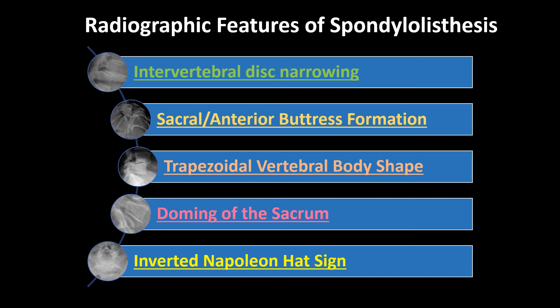Besides an anterolisthesis on an x-ray, there are multiple other radiographic features of a spondylolisthesis that may be present. These findings include intervertebral disc narrowing or degeneration if the spondylolisthesis has been there a while, anterior buttress formation, trapezoidal vertebral body shape, doming of the sacrum, and an inverted Napoleon hat sign. You don't have to see any of these, but if you do, you may be more confident in your diagnosis.